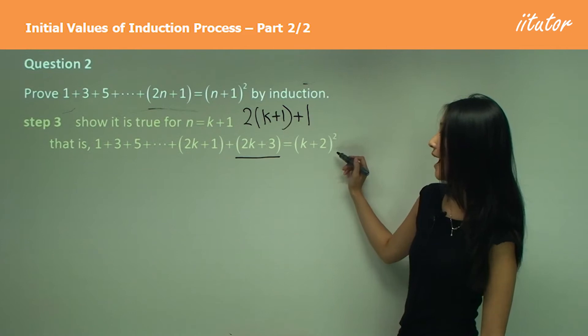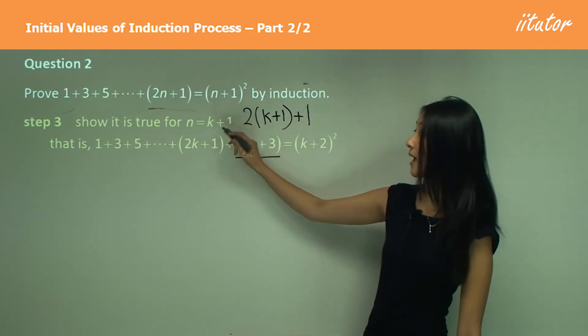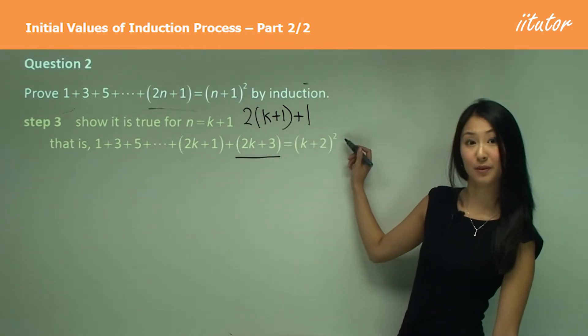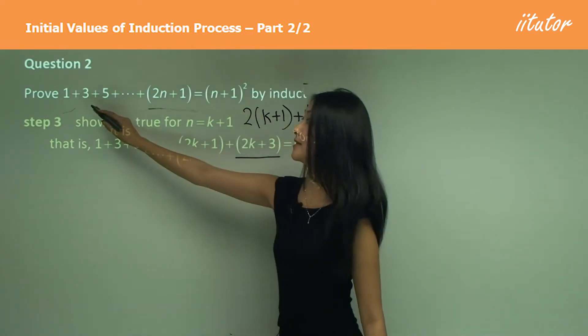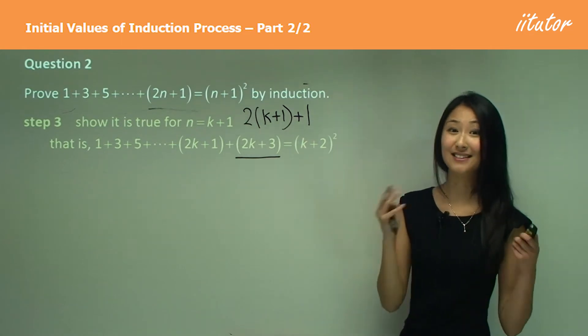On the right hand side, I've just substituted k plus one into n. So k plus one plus another one, which gives me k plus two squared. And this part over here is just the same as what we had originally. So it's the same as what we had in step two.